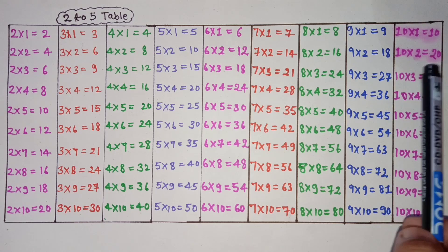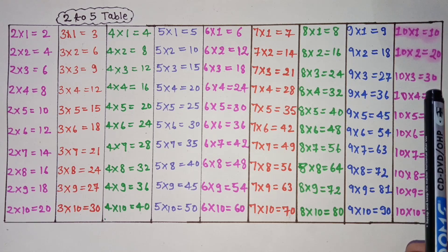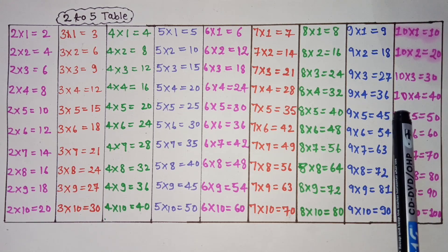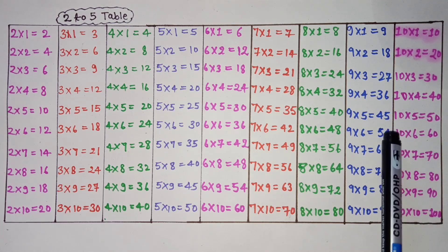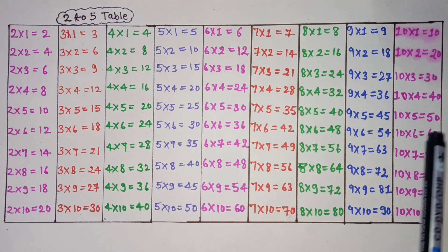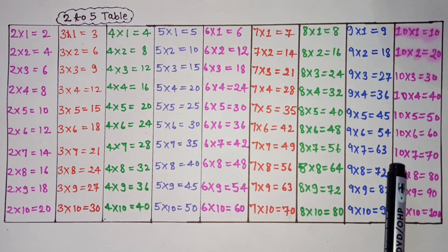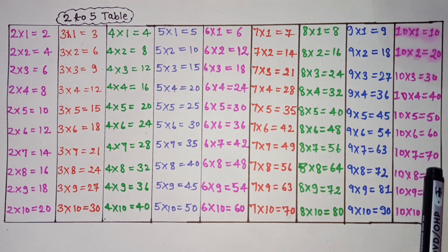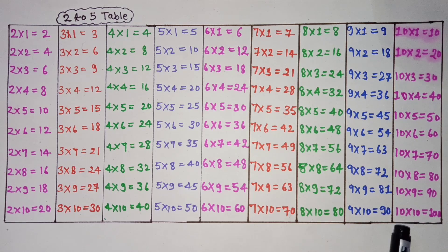10×1 is 10, 10×2 is 20, 10×3 is 30, 10×4 is 40, 10×5 is 50, 10×6 is 60, 10×7 is 70, 10×8 is 80, 10×9 is 90, 10×10 is 100.